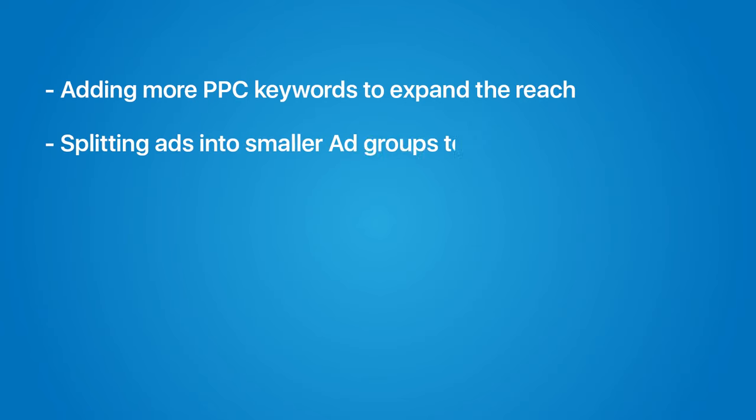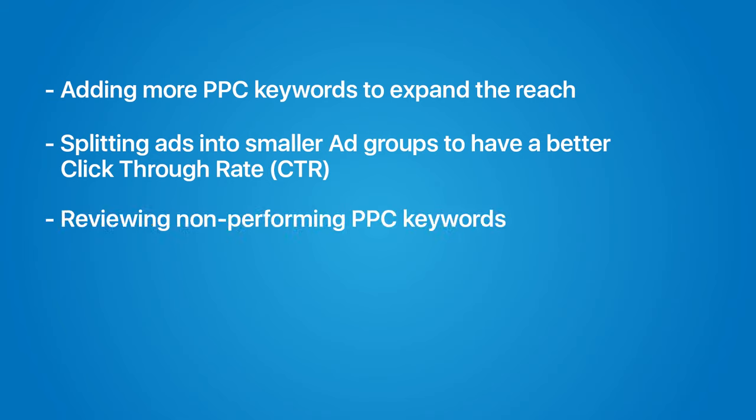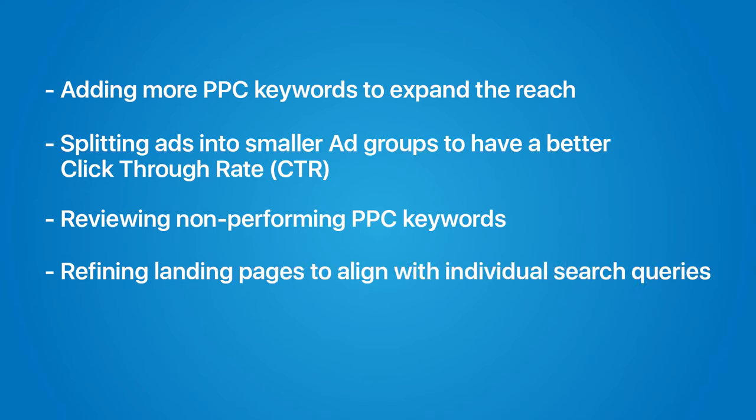You can answer this by saying an ideal approach for a pay-per-click campaign can be adding more pay-per-click keywords to expand the reach, splitting down the ads into smaller ad groups to increase the CTR, reviewing your non-performing pay-per-click keywords, or even improving your landing pages as per the individual search query. You can also talk about adding few negative keywords and how you can improve the relevancy of the campaigns. Again, if possible, try to explain each of these strategies using some examples or you might even get a detailed question on any of these strategies.